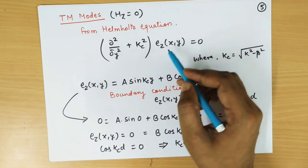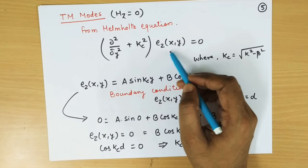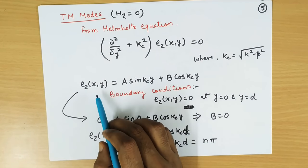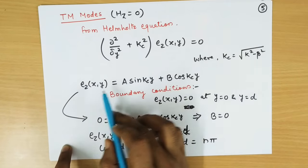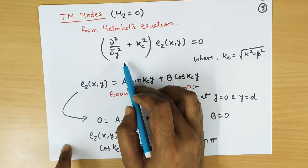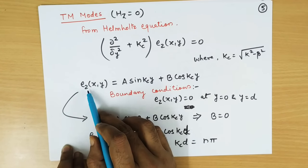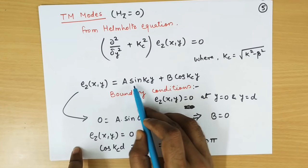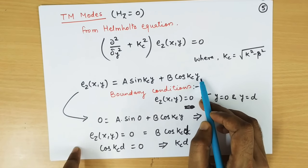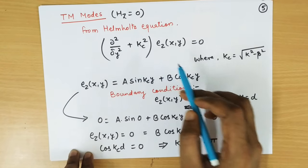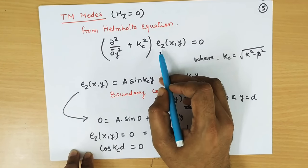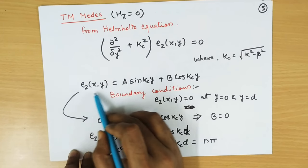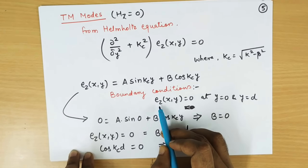Since H_Z is 0, we will write the Helmholtz equation in terms of E_Z and then solve it. The solution, since there is only variation in the y direction, is E_Z(x,y) equal to A sin(k_c y) plus B cos(k_c y). The boundary condition will be in terms of E_Z, since our solution is expressed in terms of E_Z.